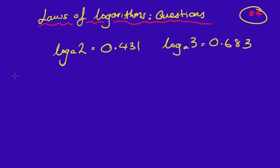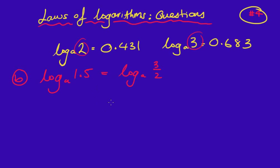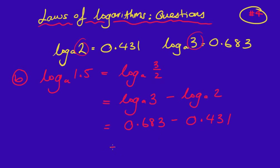The second one we are going to look at is the log of 1.5. I know that the log of 1.5 can be written as a fraction, 3 over 2 — it is the same thing. Because I have got the two values of log2 and log3, I am trying to use 3 and 2 in this equation. We know that is the same as saying log_a(3) minus log_a(2), because when we divide we can subtract them.